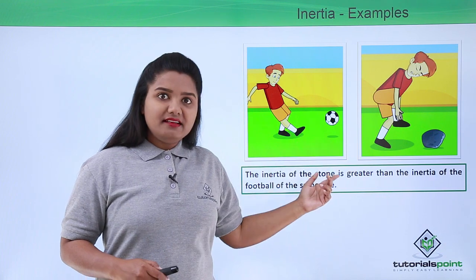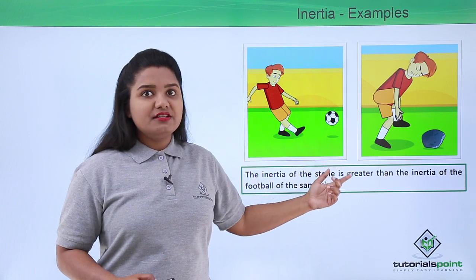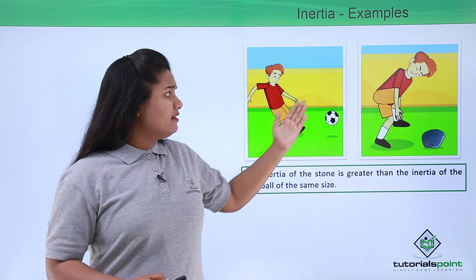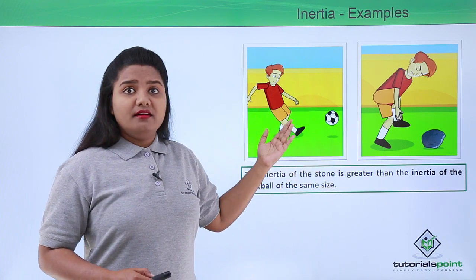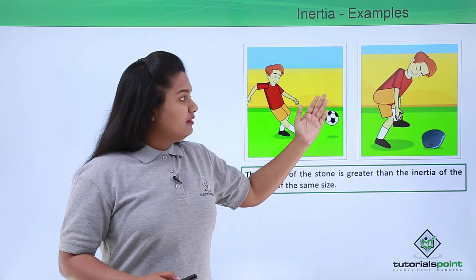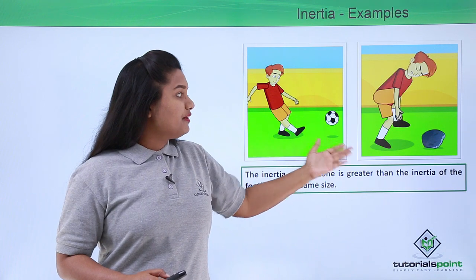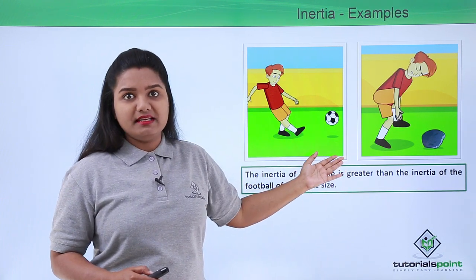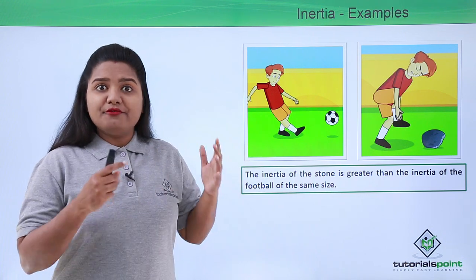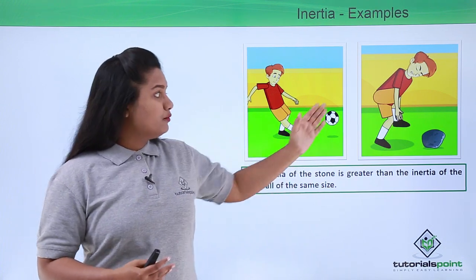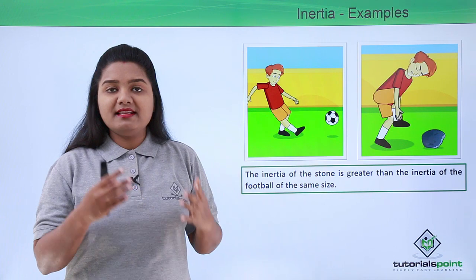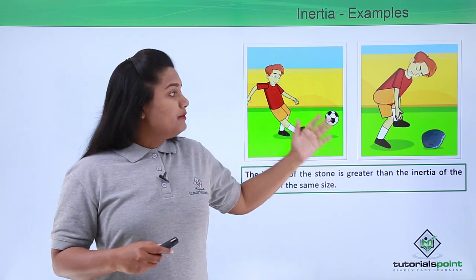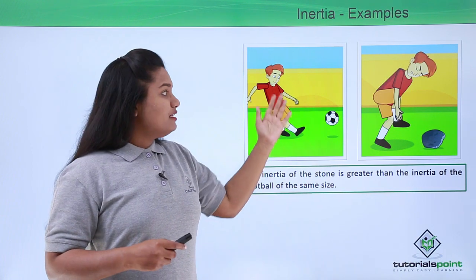Here we can also conclude that the inertia of a stone is greater than the inertia of a football of the same size. This may be because of the difference in masses of these two objects. We all know that a football is lighter compared to a stone of the same size, and that may be the reason why these two objects have different inertia.